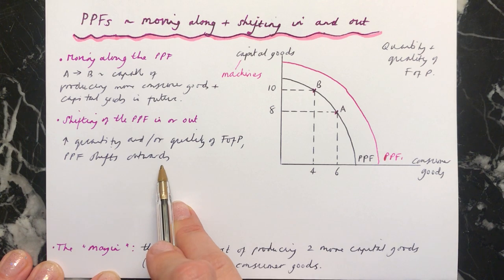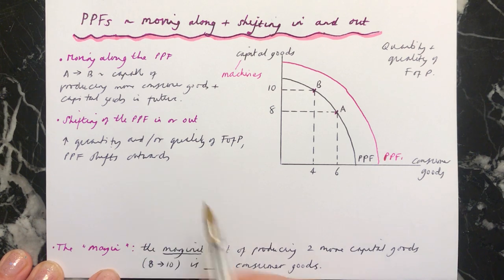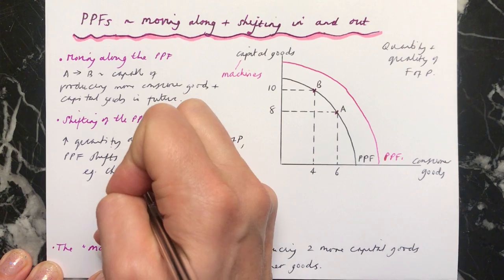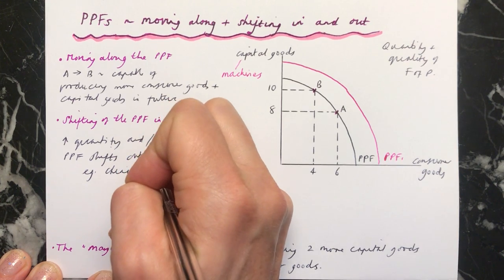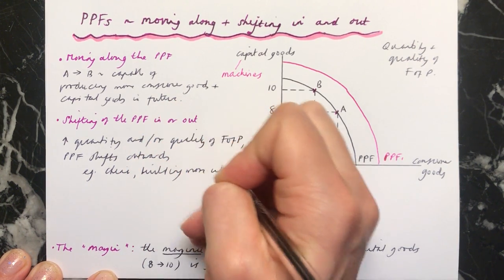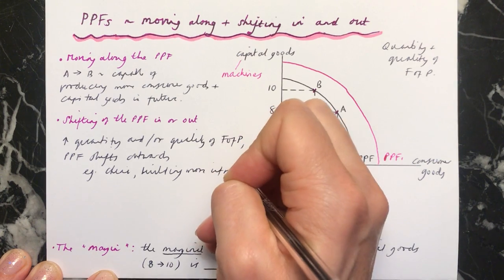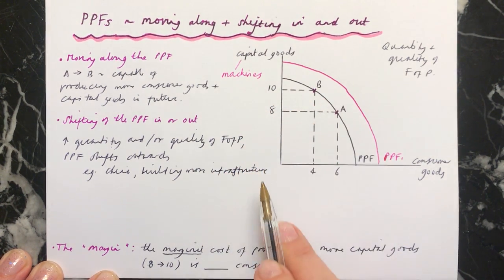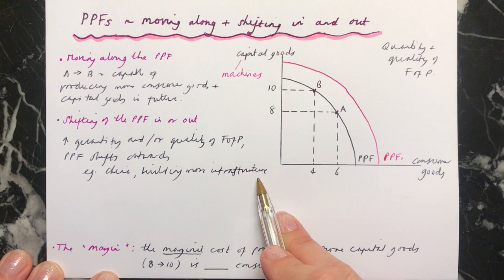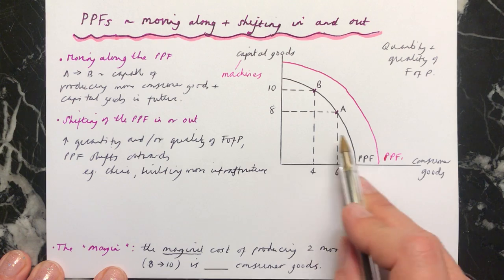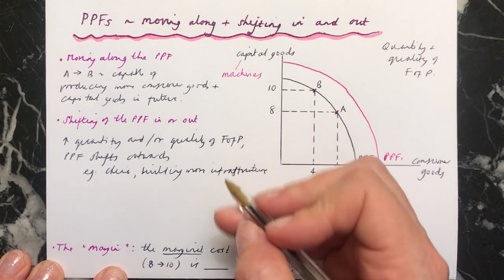For example, if in China they are building more infrastructure like roads, ports, airports, and more factories, this is going to enable them to produce more in the future. So you'd see the shift from PPF to PPF1.